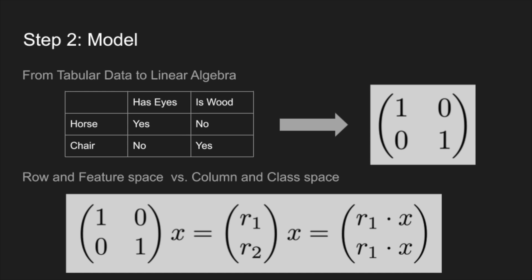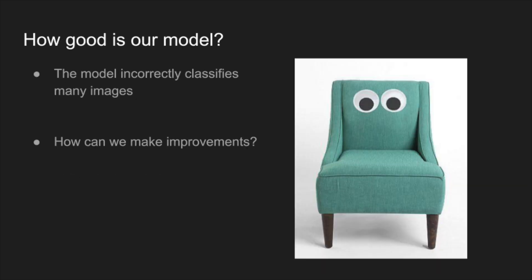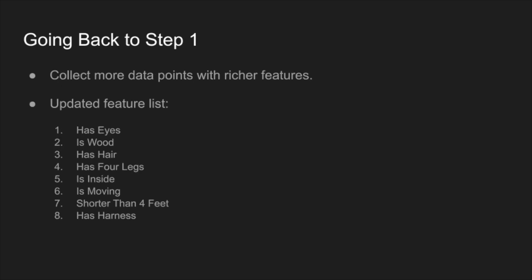So what do you guys think about this model — good or bad? It has some issues. Our model would incorrectly classify many images. For example, something that's not made out of wood but has eyes gets called a horse, but we don't want that. Ideas for improvement? Expanding the dataset is one — and collecting data points with richer features is another.